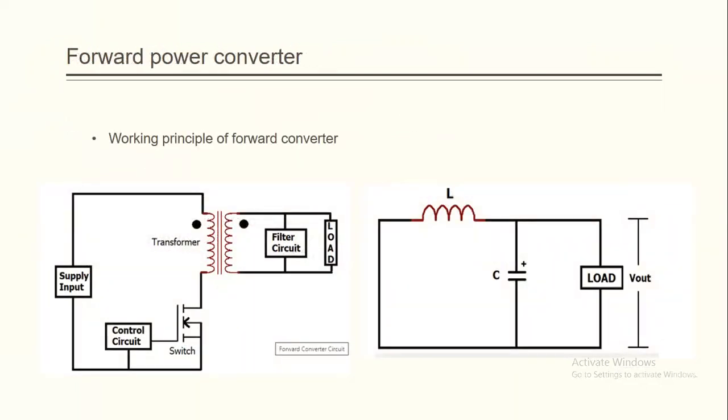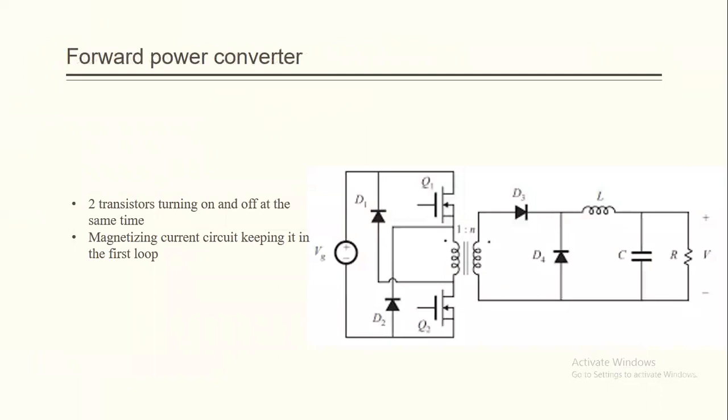As for the forward power converter, when the switch is turned on, the voltage appears at the secondary winding transformer. D3 is forward biased, which is connected to the load.